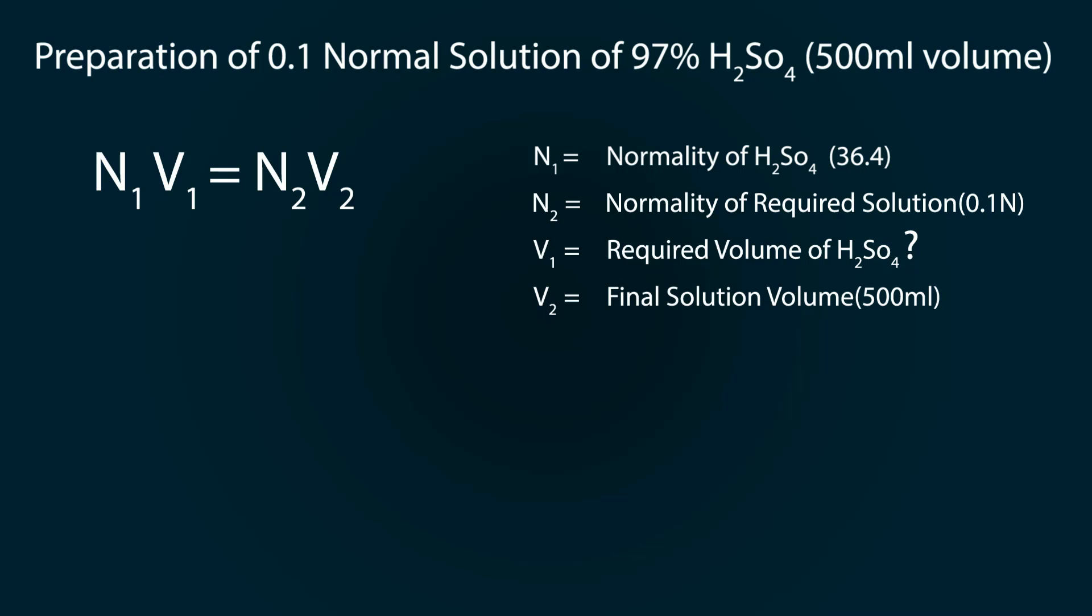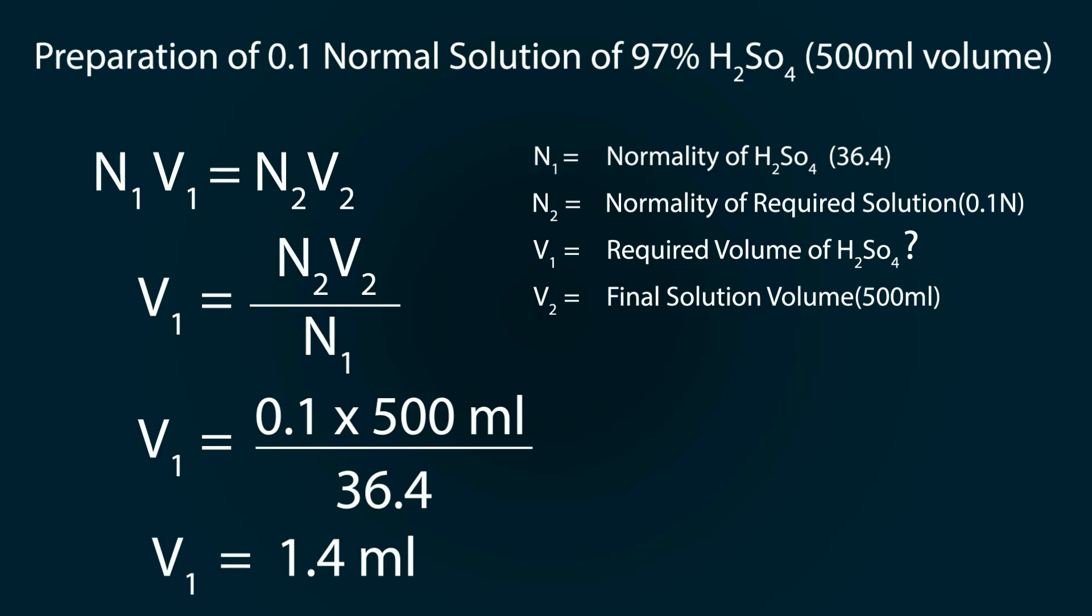Let's calculate V1: V1 = N2V2/N1 = 0.1 × 500ml ÷ 36.4 = 1.4 milliliter. This is the volume we have to pipette out.